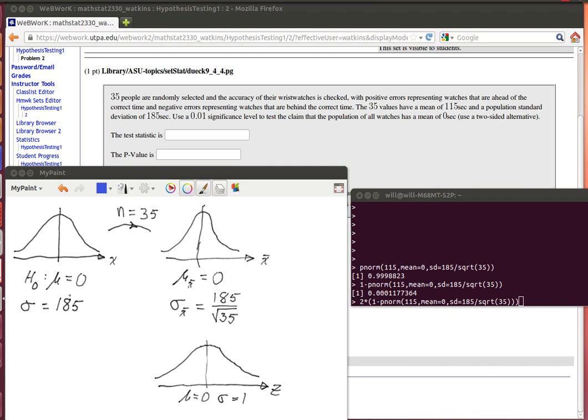The null hypothesis is that on average these watches really come out to be zero. If you looked at all of them and averaged them, the error would be zero. Miraculously, we know the standard deviation for the population is 185 seconds. It's unusual to know that, but it makes hypothesis testing much easier for us because we can use the z distribution.